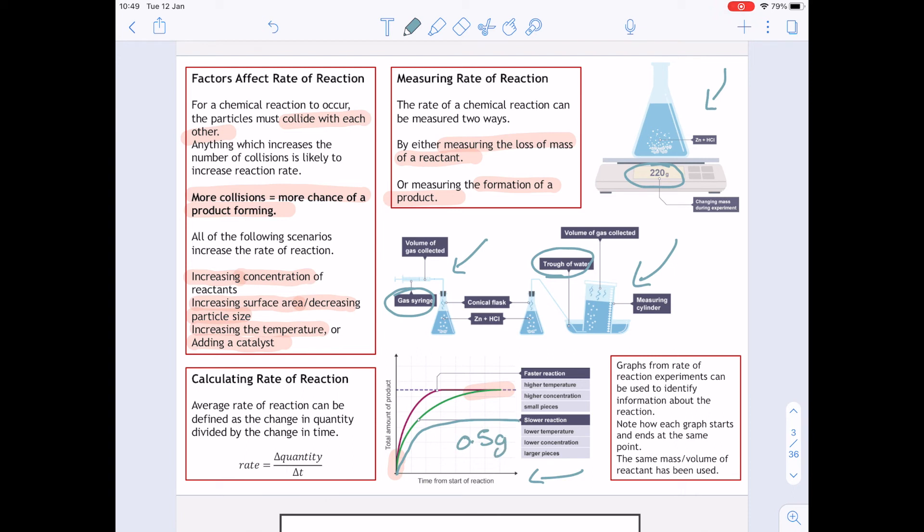And finally you can use an equation here to calculate the rate of reaction. So the average rate can be defined as the change in quantity divided by the change in time, and that is that little delta sign. So usually the quantity could be something like centimeters cubed or grams, and then time at the bottom is seconds. So that usually gives us a unit of centimeters cubed per second. But not always, you need to be careful about what reactants and what products you've got as well.